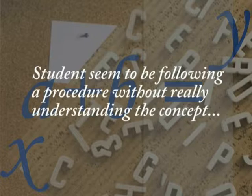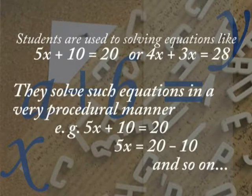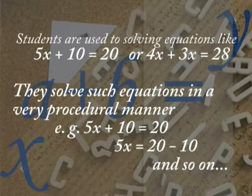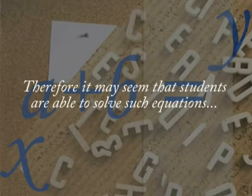Students seem to be following a procedure without really understanding the concept. Students are used to solving equations like 5x plus 10 is equal to 20, or 4x plus 3x is equal to 28. They solve such equations in a very procedural manner — for example, 5x plus 10 is equal to 20, so 5x is equal to 20 minus 10, and so on. And therefore, it may seem that students are able to solve such equations.